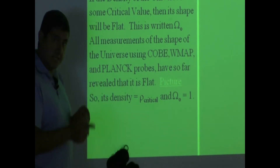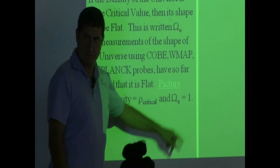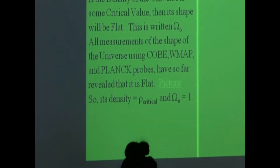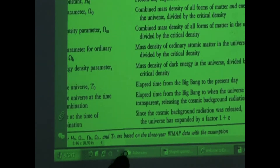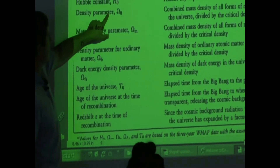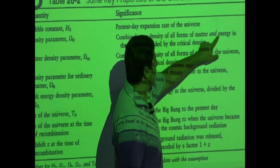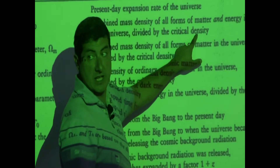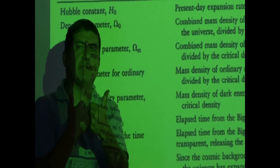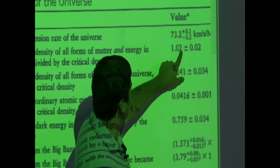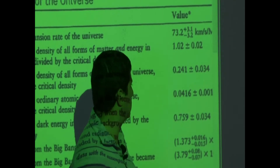Our measurements are telling us that the universe is flat; therefore, its density is equal to the critical density, and therefore omega zero is approximately 1. The density parameter omega zero is defined as the combined mass density of all forms of matter and energy in the universe divided by the critical density. The measured value is 1.02 with an uncertainty of ±0.02, which means the universe is pretty much equal to the critical density and therefore flat.